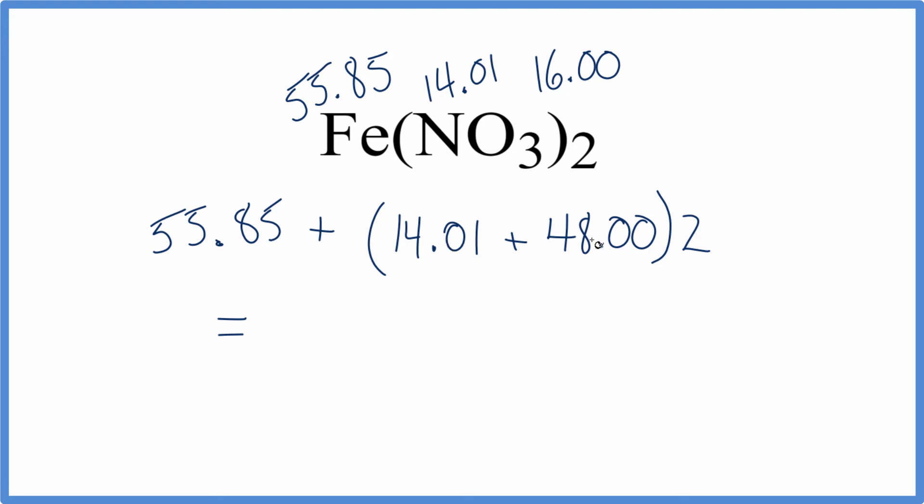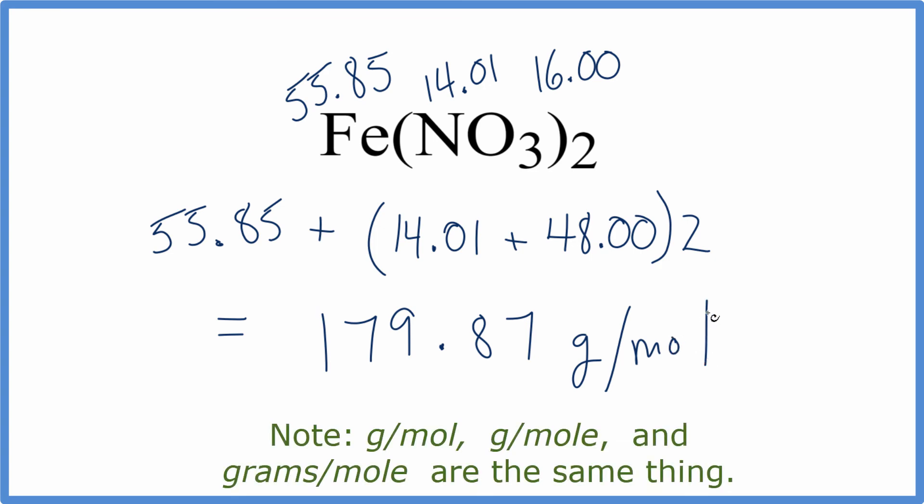Next, we'll add the 14.01 and 48.00 together, multiply those by two, add that number to the 55.85, and we end up with 179.87 grams per mole as our molar mass for Fe(NO₃)₂. That's it, this is Dr. B.